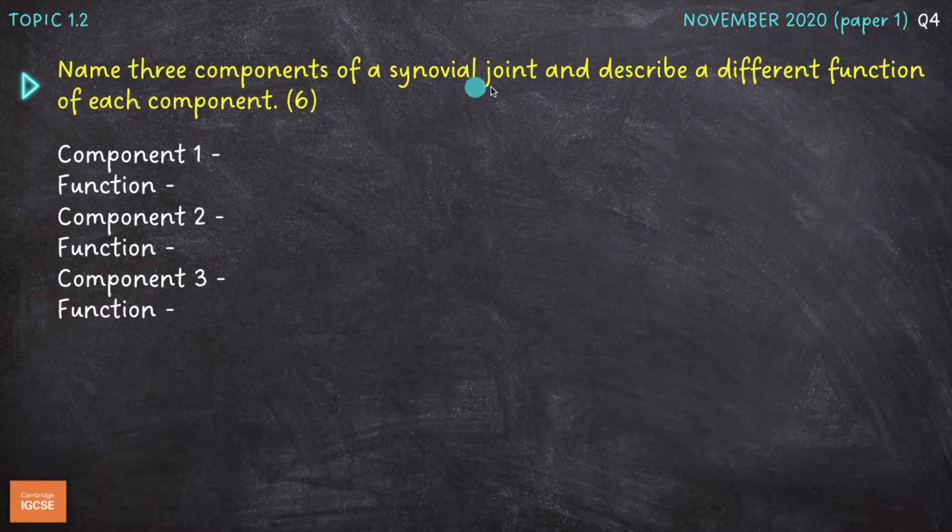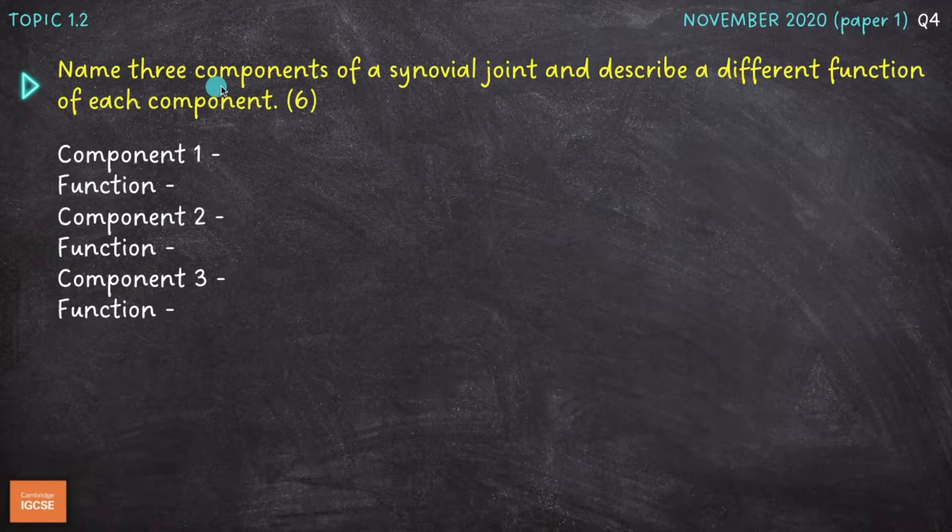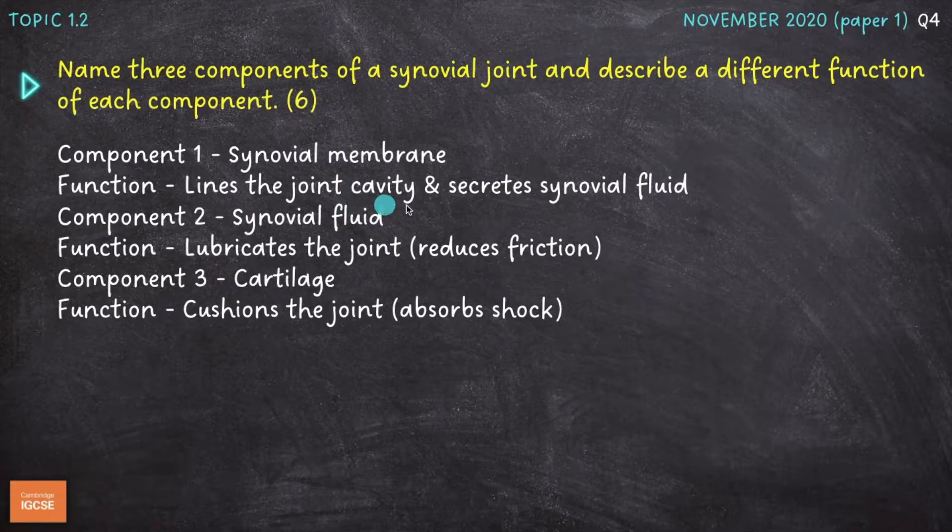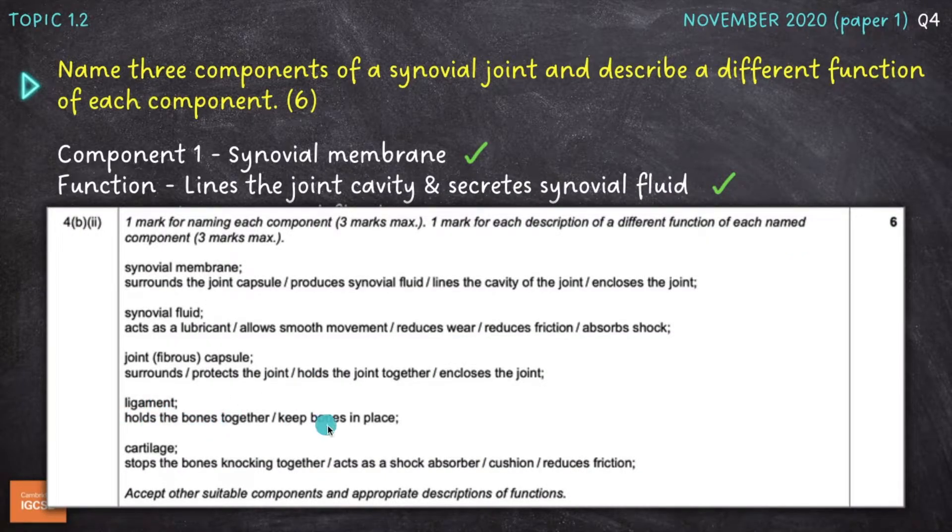Name three components of a synovial or freely movable joint, and describe a different function of each component for six marks. So this is a really easy six marks, because all you need to do is name three components of a synovial joint. That will get you three marks already. And describe the function of each component for the remaining three marks. So I've gone for synovial membrane, which lines the joint cavity and secretes or releases synovial fluid into that cavity. Synovial fluid, which lubricates the joint and reduces friction. And then component three, I've gone for cartilage, which cushions the joint or absorbs shock, preventing the bones from knocking together and creating damage. The other two components we could have gone for were ligament, which hold the bones together or keep the bones in place at joints. Or the joint or fibrous capsule, which surrounds and protects the joint and helps to hold the bones together as well.